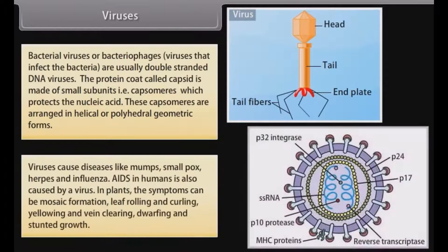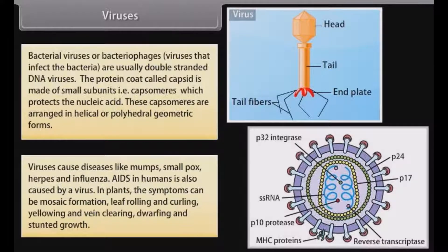Viruses cause diseases like mumps, smallpox, herpes and influenza. AIDS in humans is also caused by a virus. In plants, the symptoms can be mosaic formation, leaf rolling and curling, yellowing and vein clearing, dwarfing and stunted growth.